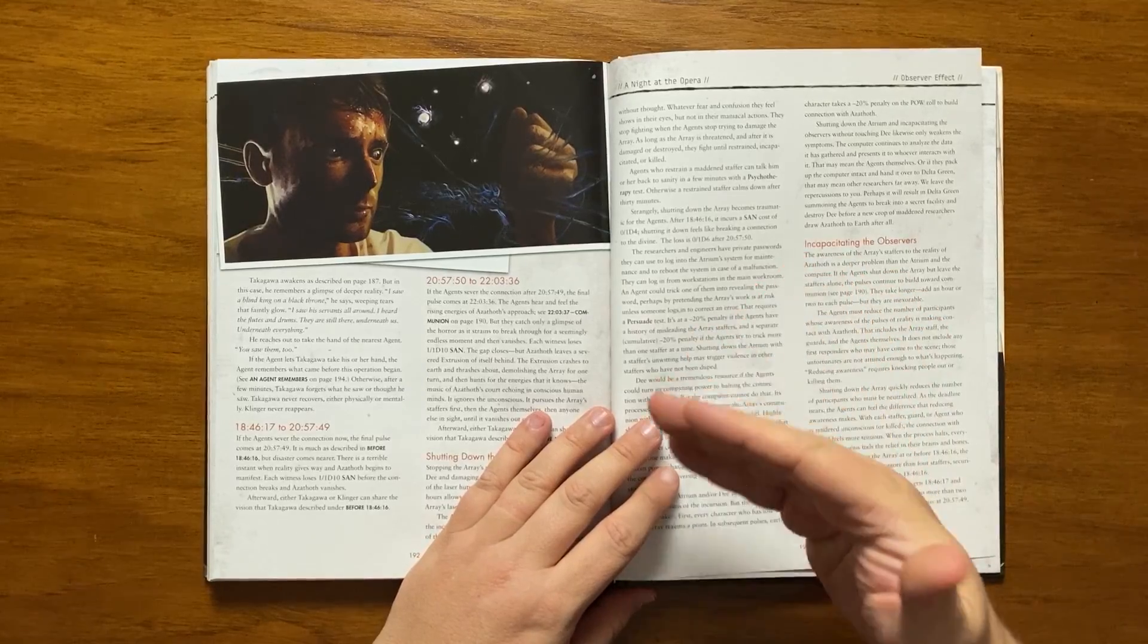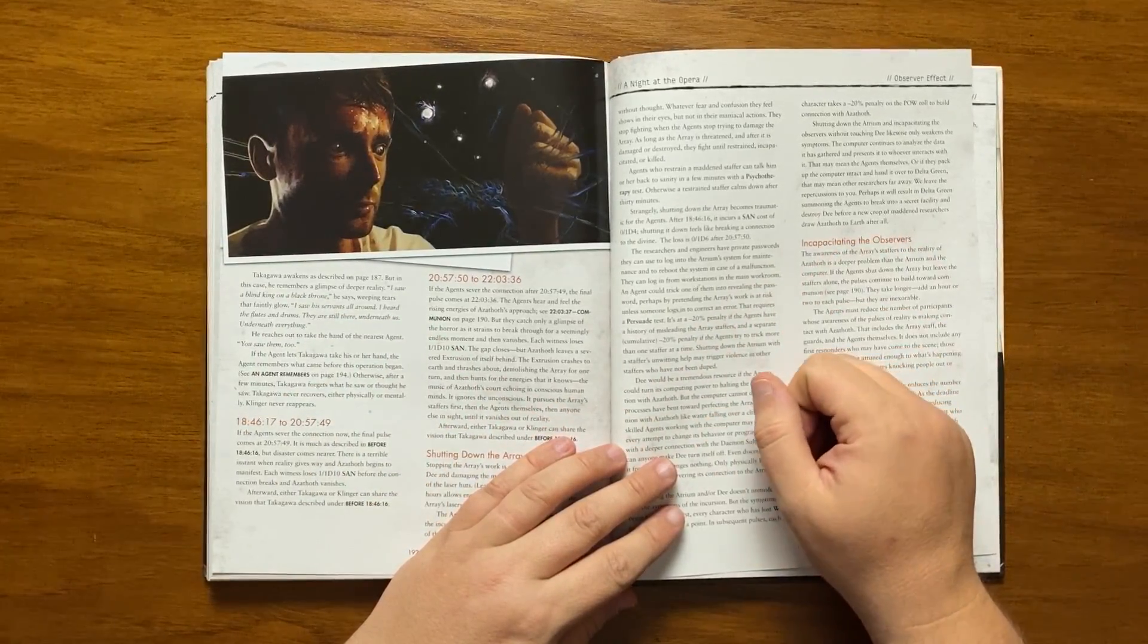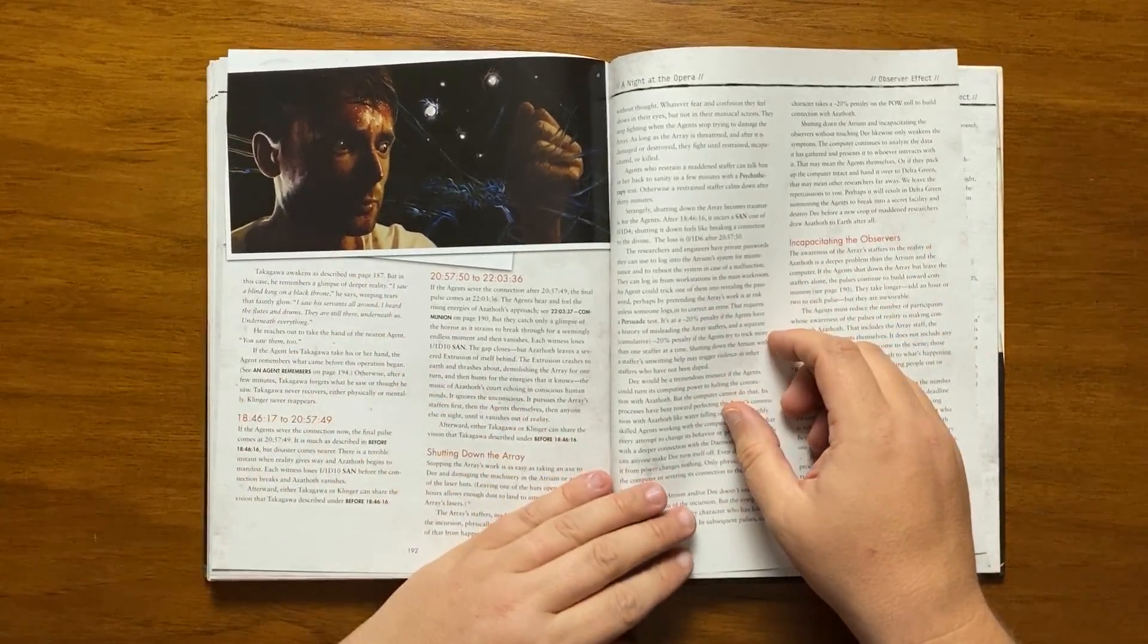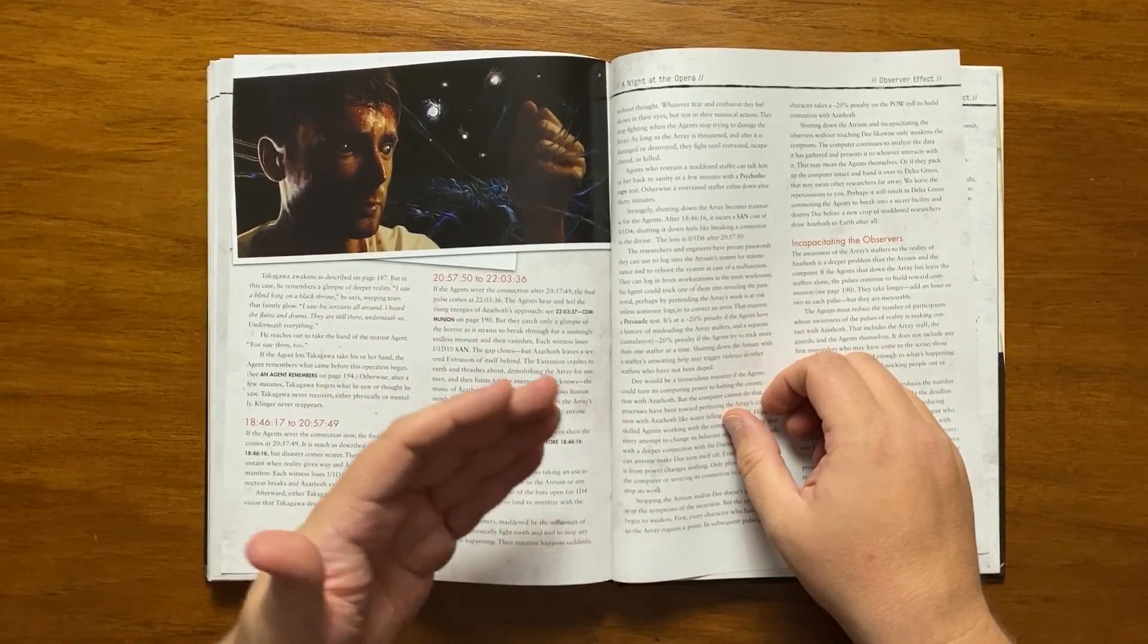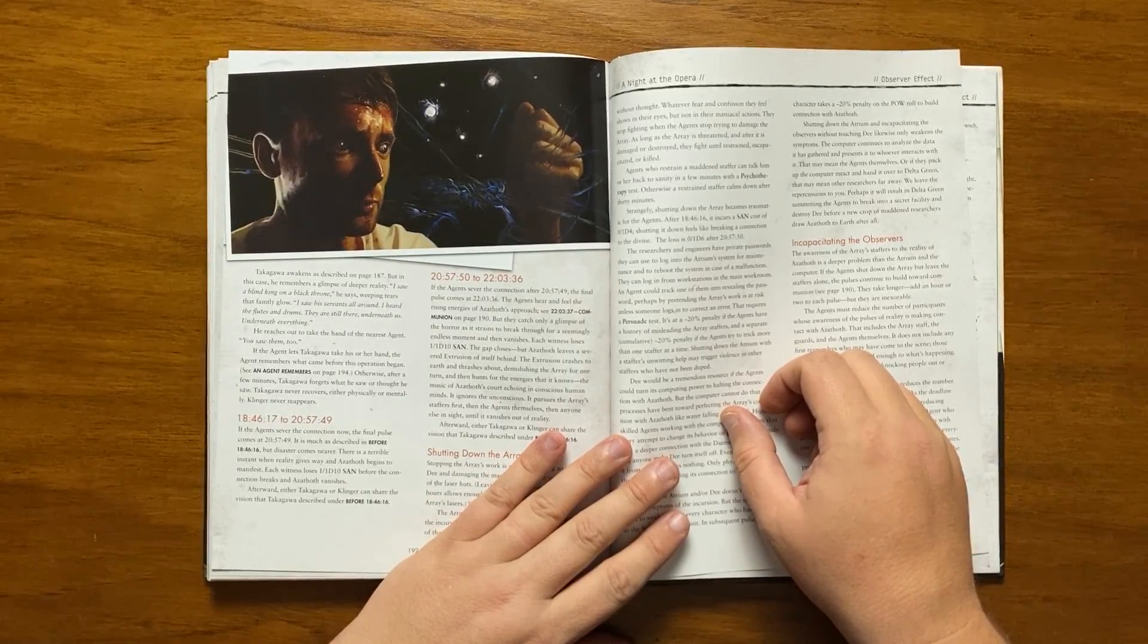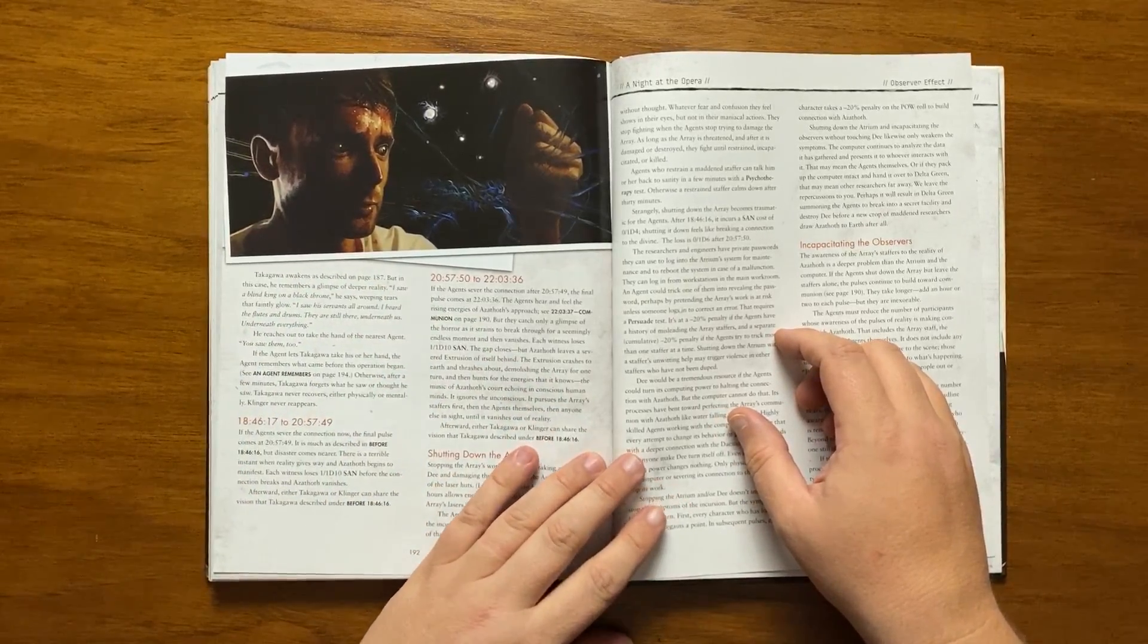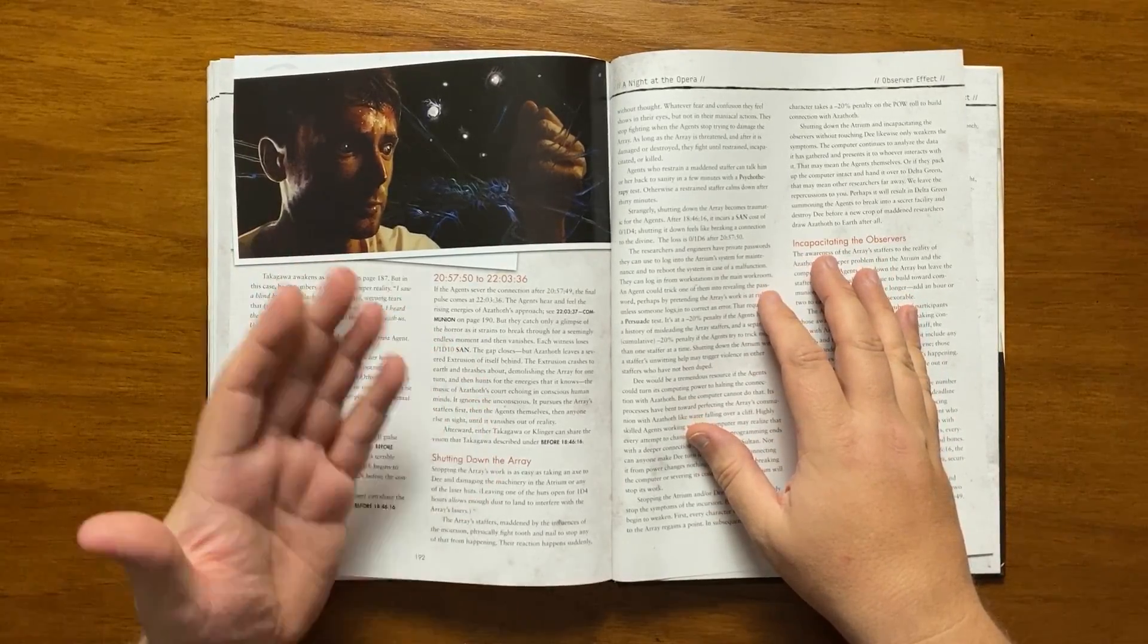Takagawa will awaken remembering a glimpse of a deeper reality and never recovers from the injuries, mental or physical, that were received. If it is done 1846 to 2057 then a final pulse comes and there is a horrifying moment when reality gives way to Azathoth and San is lost but then it vanishes. If it is done between 2057 and 2203 the agents can hear and feel the rising energies of the demon sultan's approach, catching a glimpse of the horror from a single endless moment before it vanishes. Azathoth leaves a severed extrusion of itself behind that crashes to earth, thrashing and demolishing the array, pursuing the staff there and then vanishing out of reality.